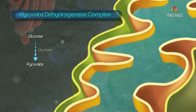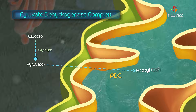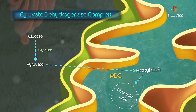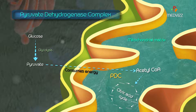Pyruvate dehydrogenase complex. The pyruvate dehydrogenase complex converts pyruvate into acetyl-CoA through several reactions, linking glycolysis and the citric acid cycle in the mitochondria. The complex is located in the mitochondrial matrix, and the transport of pyruvate into the mitochondria consumes energy, lowering the total ATP production of aerobic glucose metabolism.